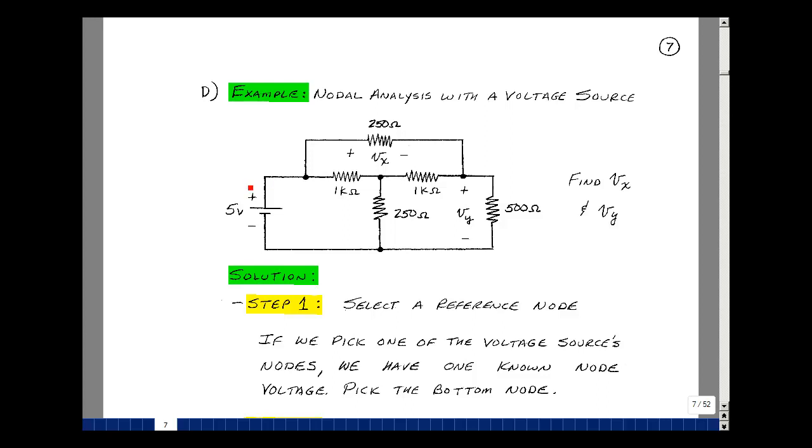Given a circuit with one voltage source and five resistors, can you solve for the voltage V sub x and V sub y? We're going to use the same five-step algorithm we used in the previous example, and the first step is to select a reference node. Let's do this very carefully.